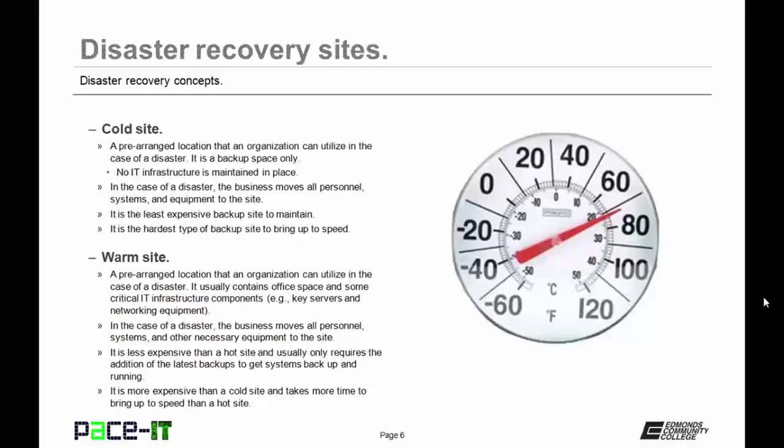Then there is the warm site. It is a pre-arranged location that an organization can utilize in the case of a disaster. It usually contains a pre-setup office space and some critical IT infrastructure components, as in copies of key servers and networking equipment. In the case of a disaster, the business moves all personnel, systems, and other necessary equipment to the site and usually only requires the addition of the latest backups to get the system back up and running. But it is more expensive than a cold site and takes more time to bring up to speed than a hot site.